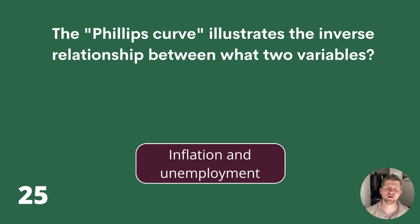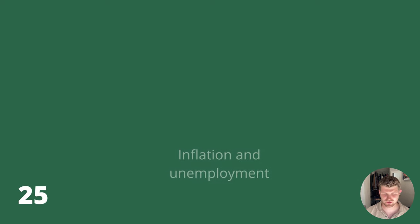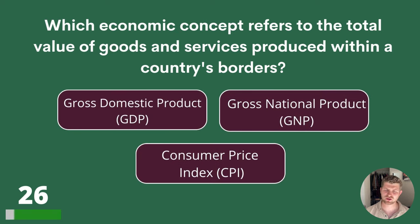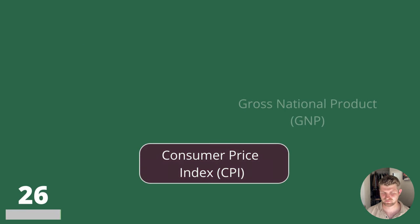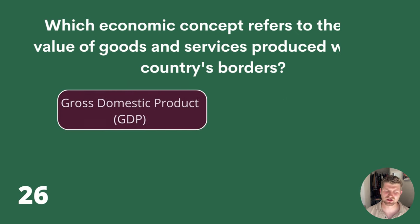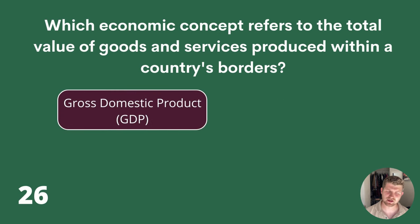We're halfway there! Question 26. Which economic concept refers to the total value of goods and services produced within a country's borders? Gross Domestic Product, Gross National Product or Consumer Price Index? The answer is Gross Domestic Product — GDP.